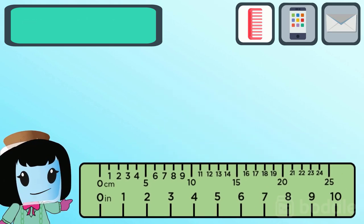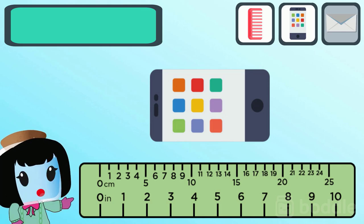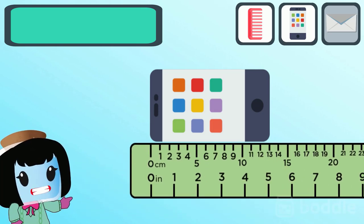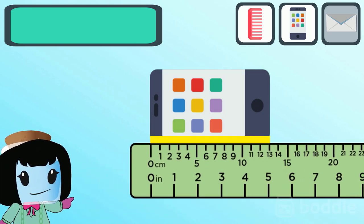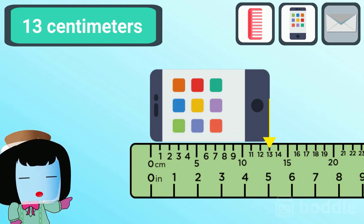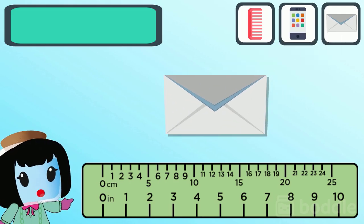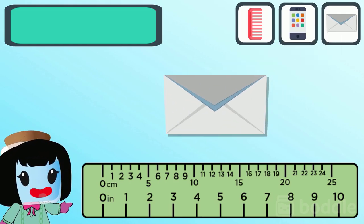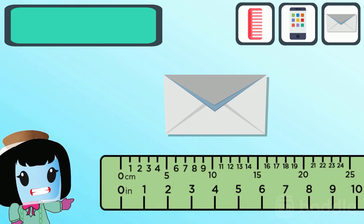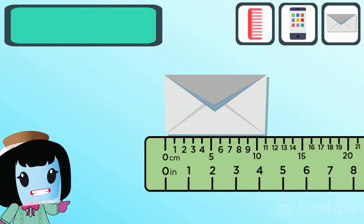How long is this phone in centimeters? Again, place the ruler properly and we get 13 centimeters. How long is this letter in centimeters? Let's properly place the ruler and check the number across the right edge. Looks like this letter measures 11 centimeters.